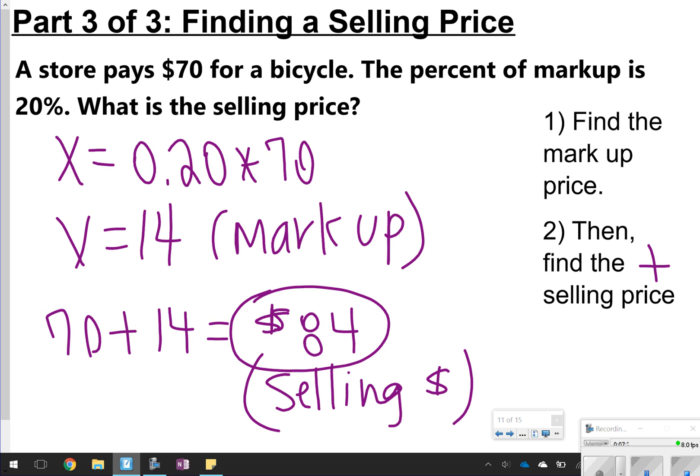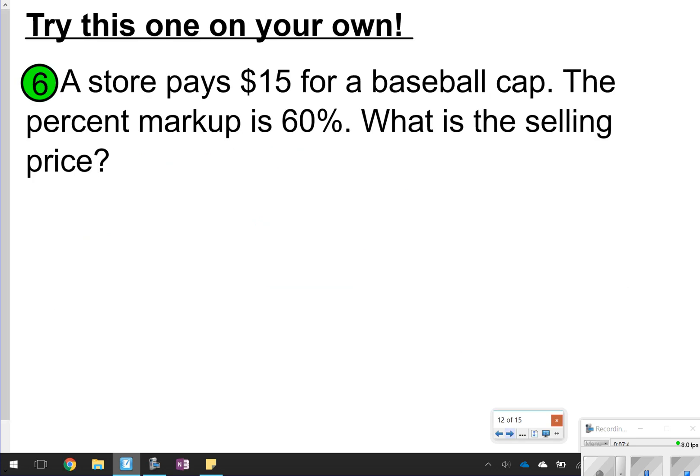So it's very similar to discounts. The only difference is instead of subtracting at the very end, you're going to be adding it back to it. Markups could also, not another word for it, but you would use this same method to find tax. If you're trying to calculate tax on something, you could also use the same method if you're going to try to find tip. Like if you're at a restaurant and you're wanting to tip your server. Okay. This one you're going to try on your own. You're going to try this one and one more. So let's go ahead and pause the video, find the markup and the selling price, and then click play.